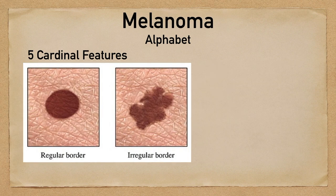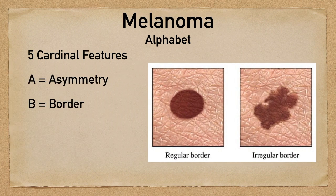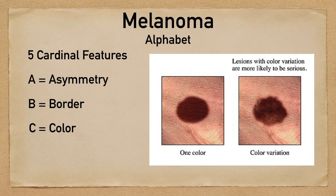B stands for border. Rather than having a nice smooth border, there's going to be some irregularity to it, and that could also indicate melanoma. C stands for color. Rather than having a nice uniform color throughout the lesion, there's going to be some color variation, and this can be concerning.